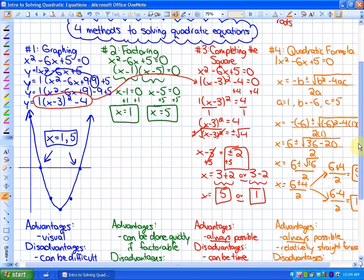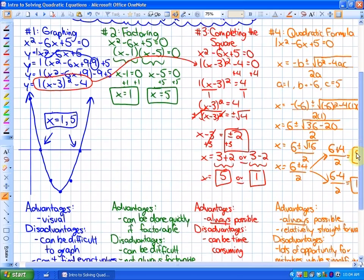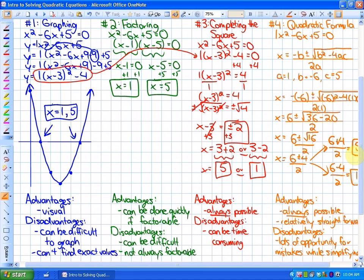Advantages and disadvantages of each are listed below. Advantages to graphing is that it's a visual method, so it's really easy to visualize where those points are. Disadvantages are that it can be difficult to graph, and also if it's not whole numbers, you cannot determine exact values from the graph.